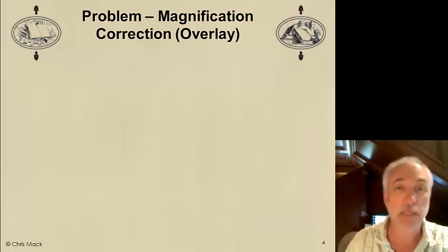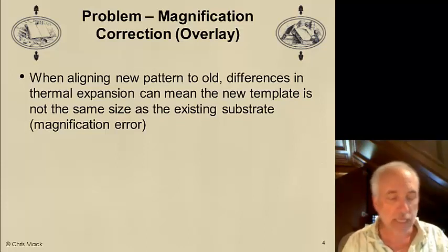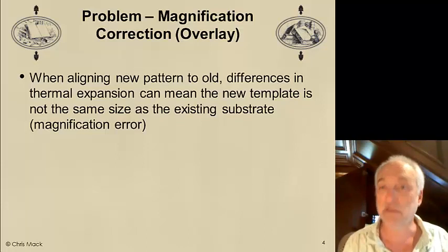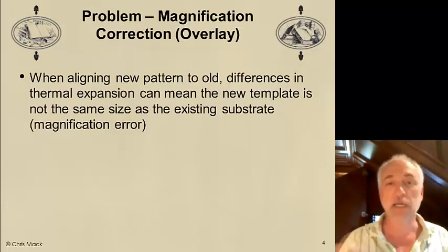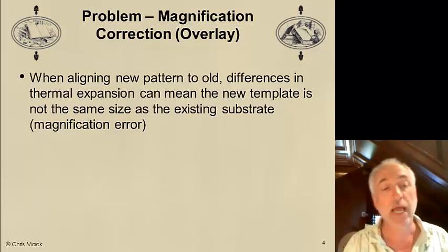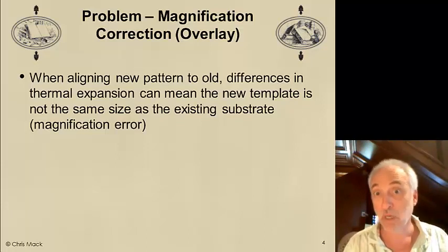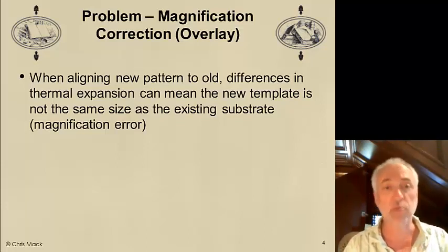There's also the problem of overlay, and one aspect is magnification correction. When I print a pattern onto a wafer and then bring in a template to print a second pattern on top, the size of the wafer can change over the course of processing. If the temperature changes just a little bit, or if processing steps caused the wafer to expand and not contract back to its original size exactly, small temperature variations with different thermal expansion coefficients between substrate and template cause differences in size. This is called a magnification error — one aspect of overlay error.